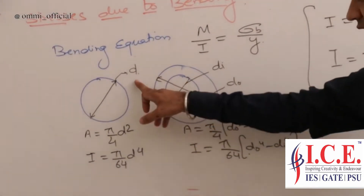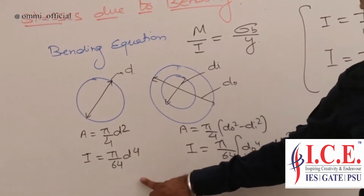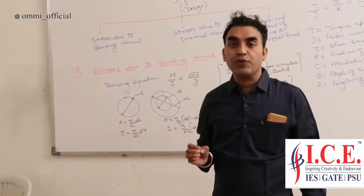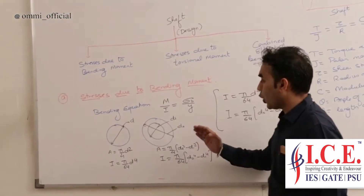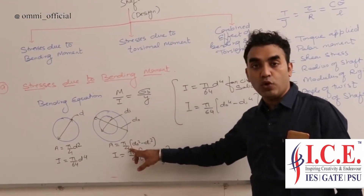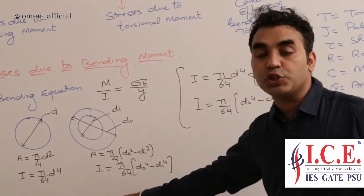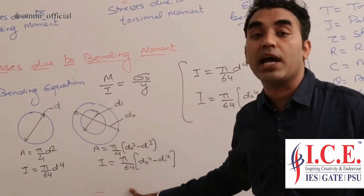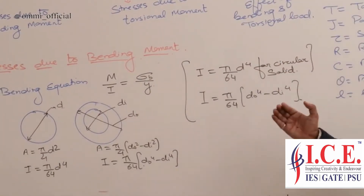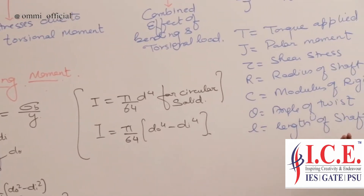For the solid shaft, the area is pi by 4 times d squared. I, that is your moment of inertia, is pi by 64 times d to the power 4. For the hollow shaft, A is pi by 4 times (outer diameter squared minus inner diameter squared), and I is pi by 64 times (outer diameter to the 4th minus inner diameter to the 4th).